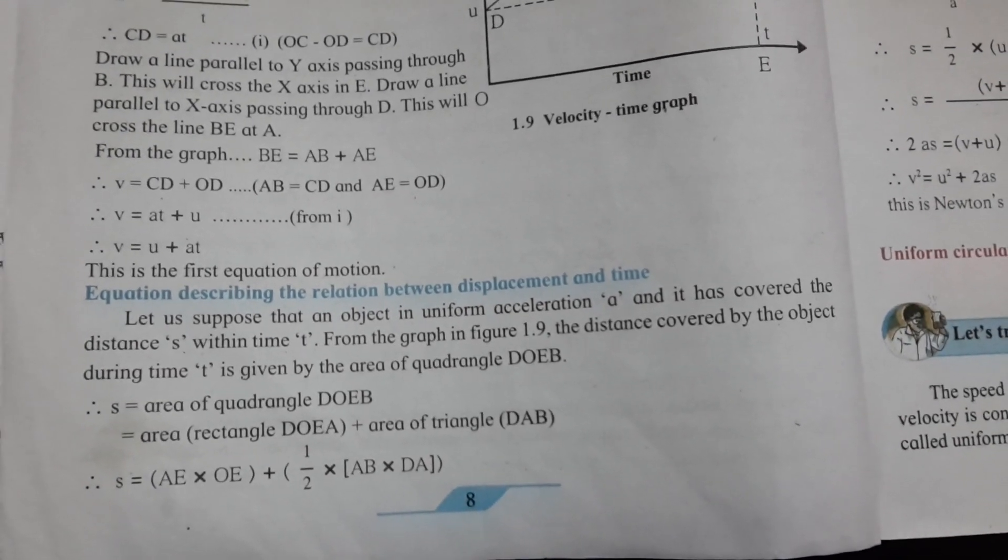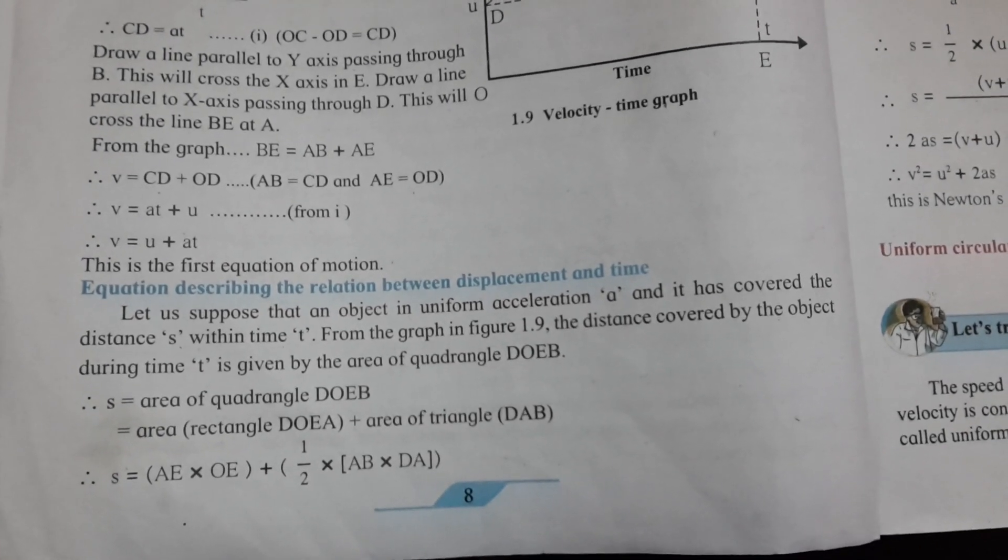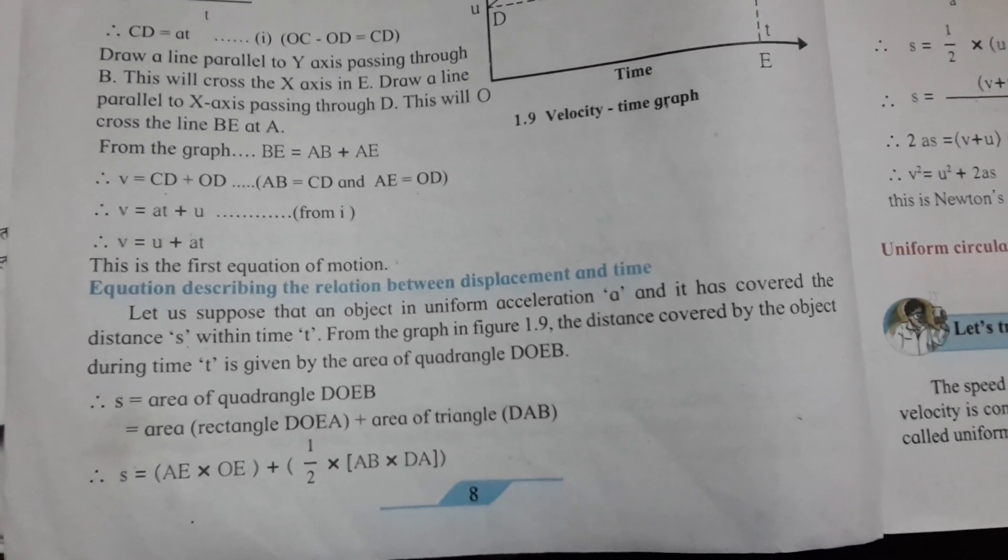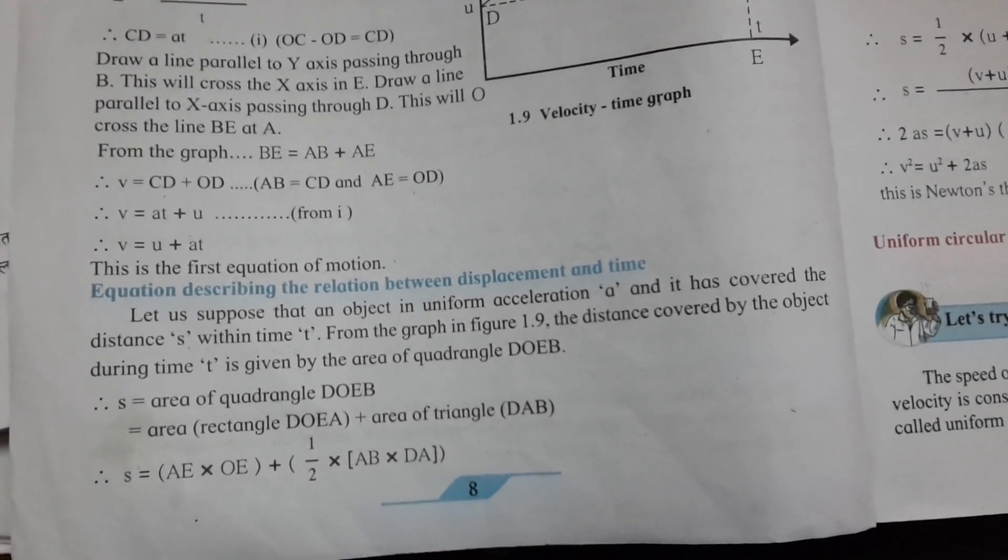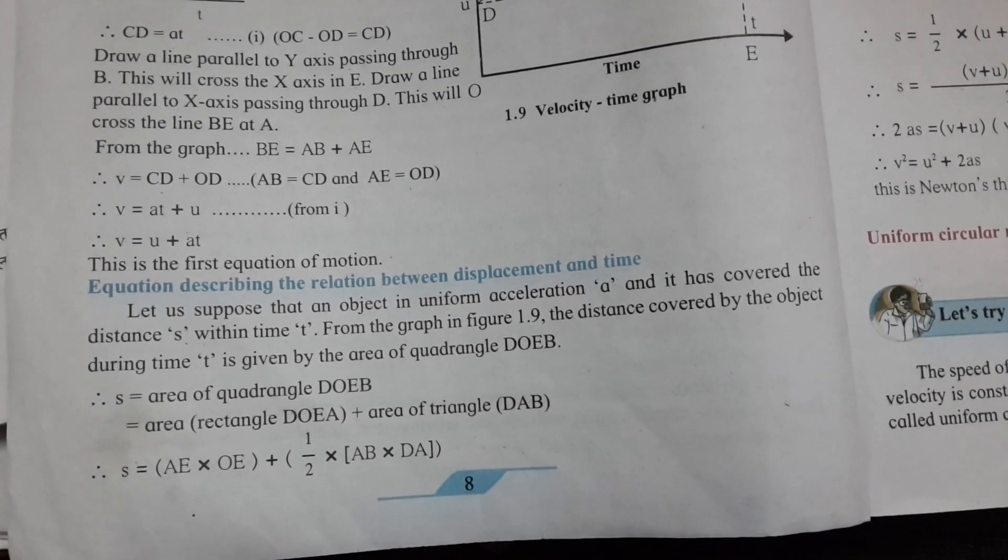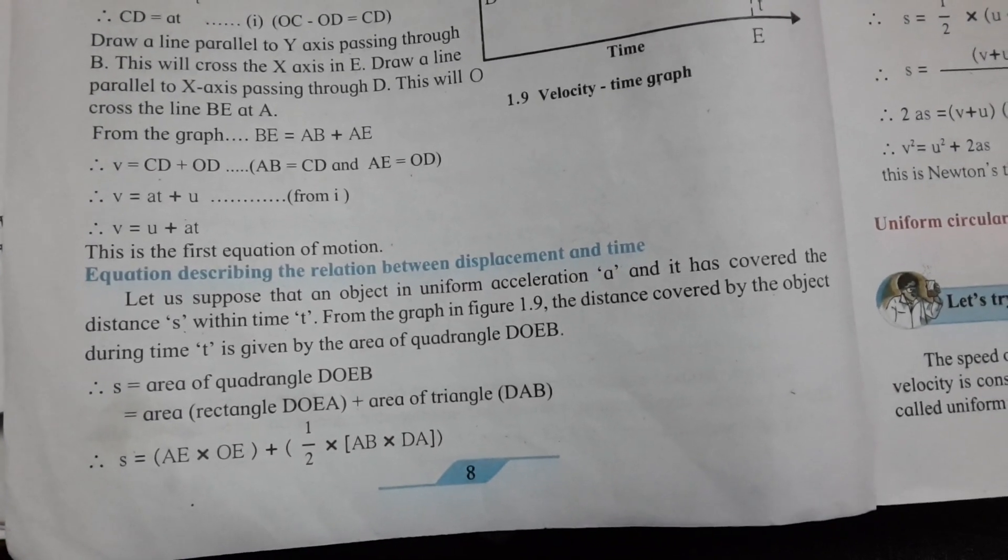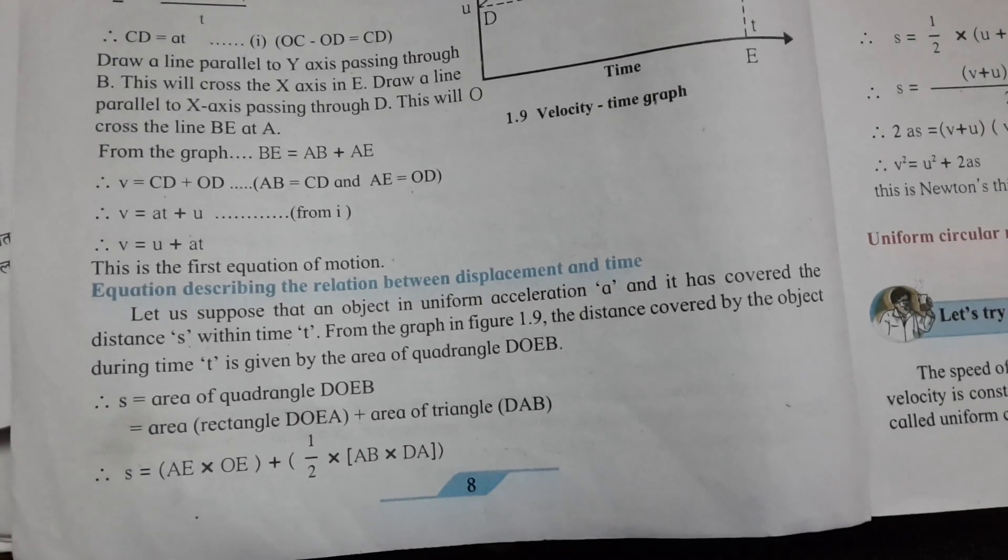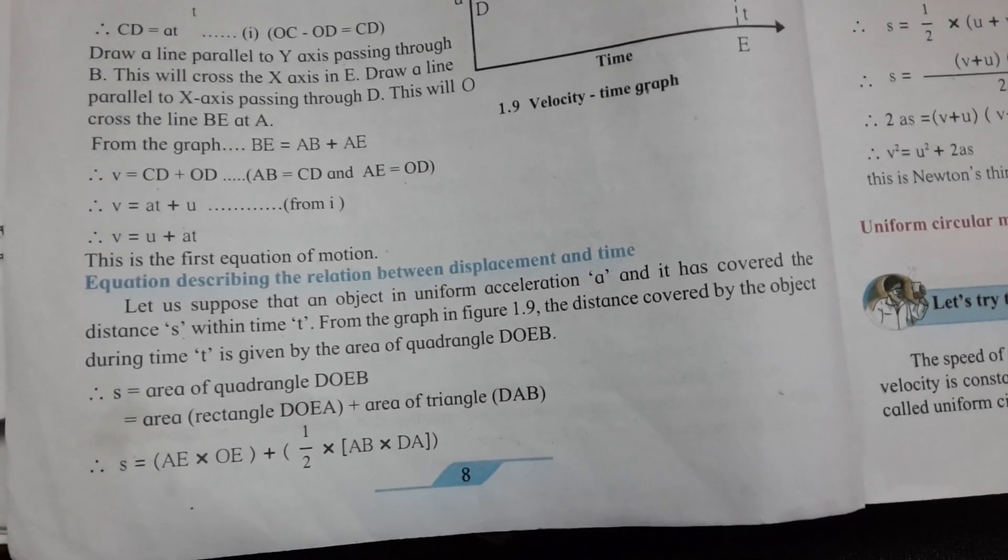S equals area of quadrangle DOEB. S equals area of rectangle DOEA plus area of triangle DAB.